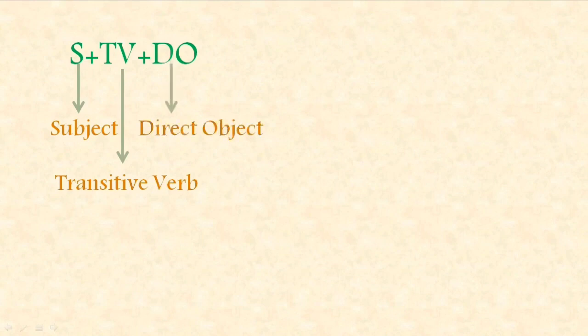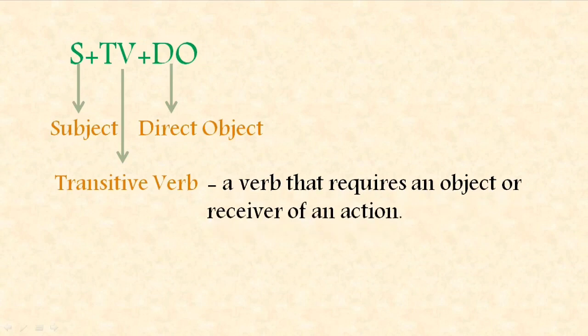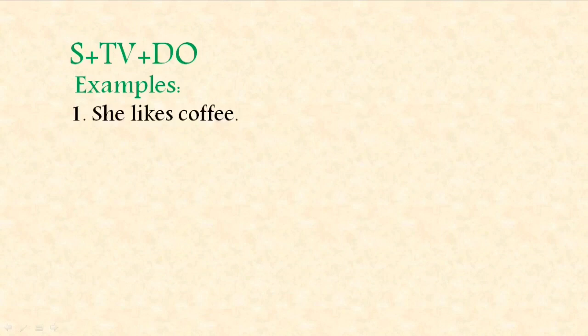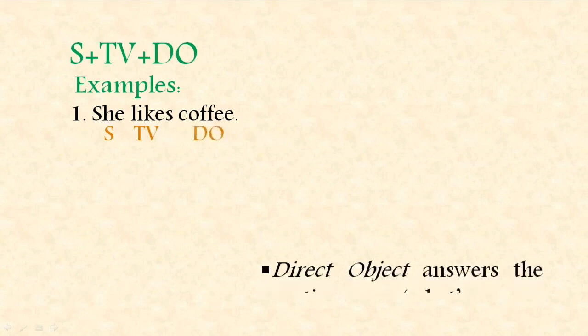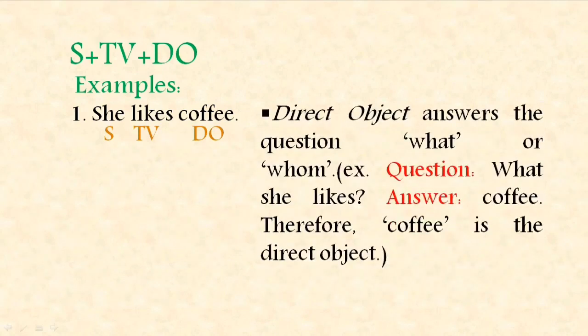The next pattern is STVDO, or subject plus transitive verb plus direct object. A transitive verb is a verb that requires an object or receiver of an action, while a direct object is the receiver of an action. Example: 'She likes coffee' — the subject is 'she,' the transitive verb is 'likes,' and the direct object is 'coffee.' The direct object answers the question 'what' or 'whom' — what does she like? Coffee. Therefore, coffee is the direct object.